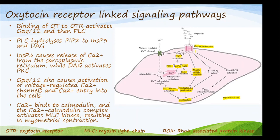The oxytocin receptor also produces RhoA/ROK activation — that is, RhoA associated with protein kinase — which in effect produces an increase in MLC phosphorylation, also causing contraction.